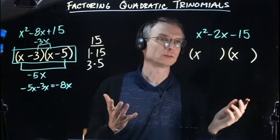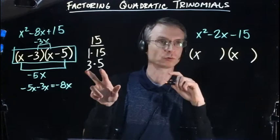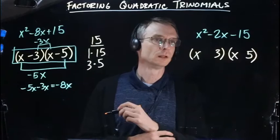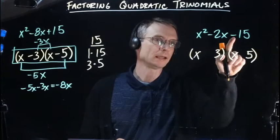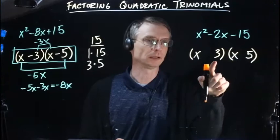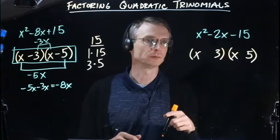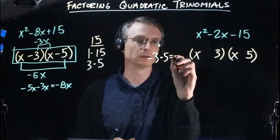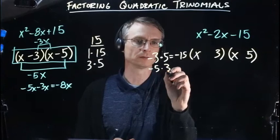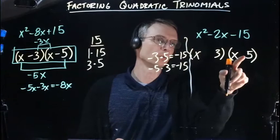I'll try 3 and 5. We have negative 15, so one of these has to be negative: either negative 3 times positive 5, or negative 5 times positive 3. We know one has to be negative, so we can guess.